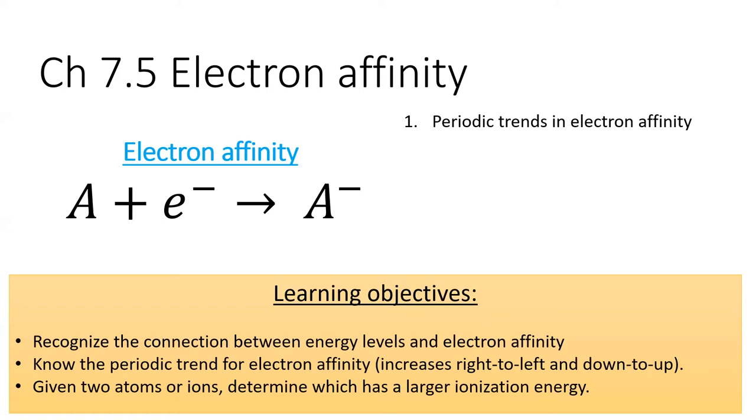Some elements, such as the halogens, will do anything for another electron and have the highest electron affinities. Other elements, like noble gases, wouldn't take an electron if you handed it to them on a silver platter.